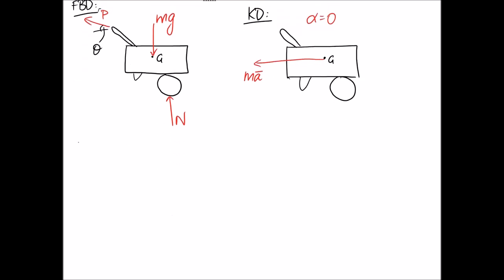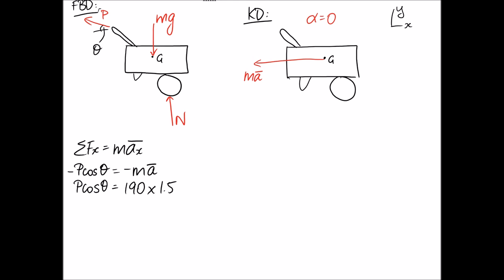Summing forces in the x-direction, equal to mass times acceleration in x through the center of gravity G: using a standard x-y coordinate system, we have the x-component of P which is P·cosθ, pointing in the negative x-direction. The weight and normal force are both in y, so they don't contribute. The right-hand side from the kinetic diagram is mA̅ in the negative x-direction. Cancelling negatives, P·cosθ = 190 × 1.5 = 285 N.